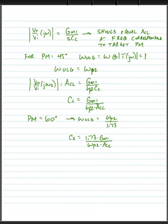This makes sense. If we want a larger phase margin, we would need a bigger compensation capacitor, and the compensation capacitor would be bigger by a factor of 1.73.